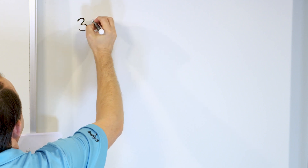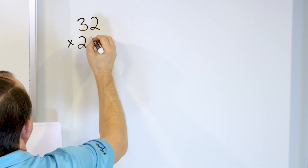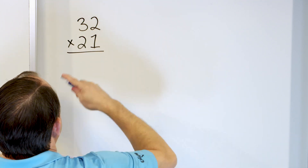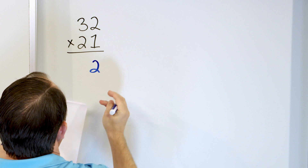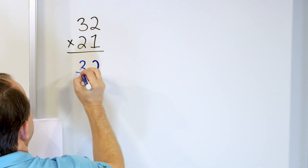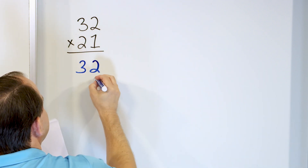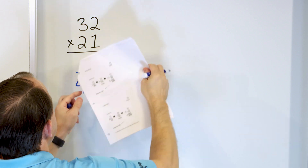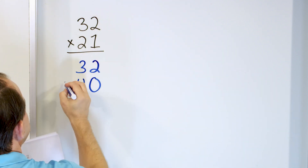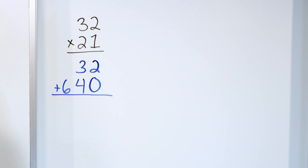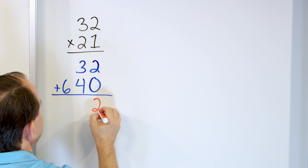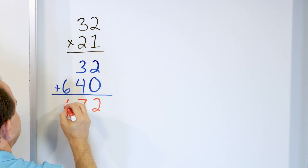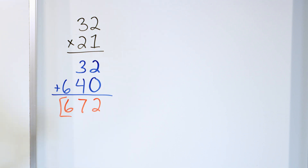Only four more problems. Let's take a look at 32 multiplied by 21. We have 1 times 2, which is 2. We're not going to write it directly underneath — we'll give ourselves a little bit of space. Then 1 times 3 is 3, which goes right here. Now we multiply by the 2, but first we put a 0 here. Then 2 times 2 is 4, and 2 times 3 is 6. Then we add: 2 plus 0 is 2, 4 plus 3 is 7, and 6 plus 0 is 6. So the answer is 672.